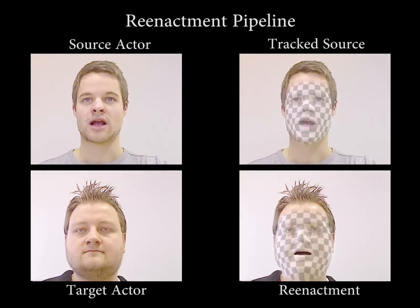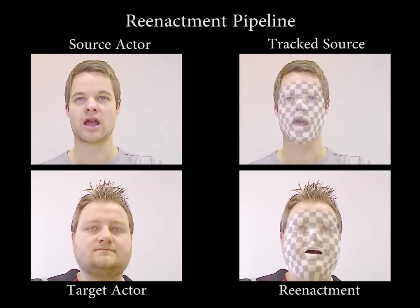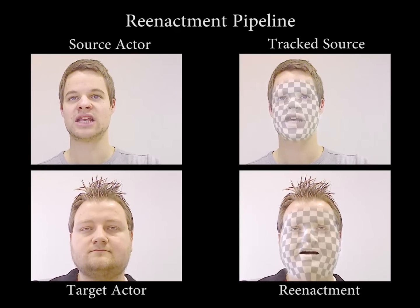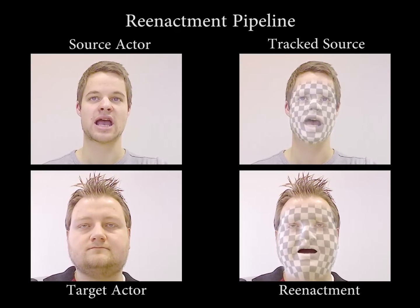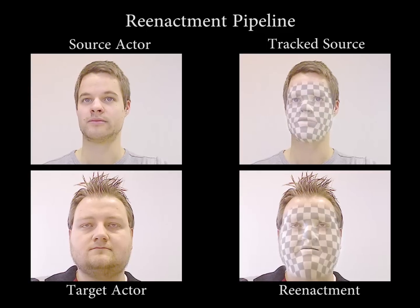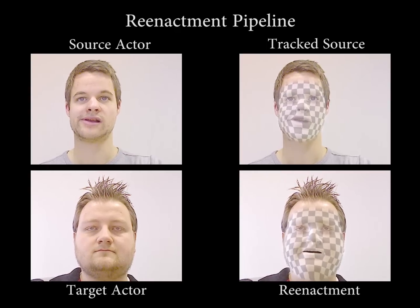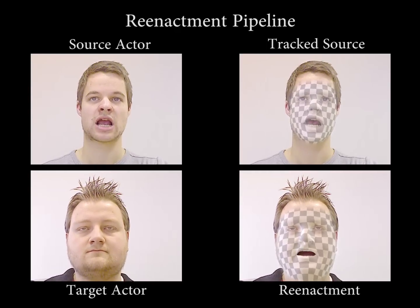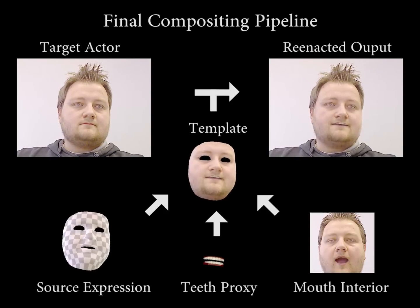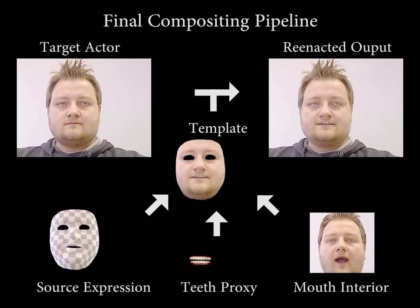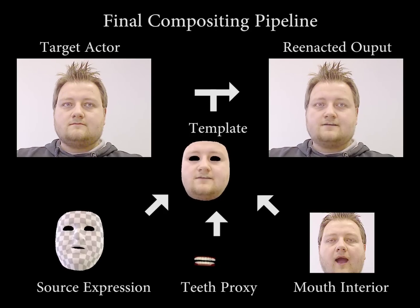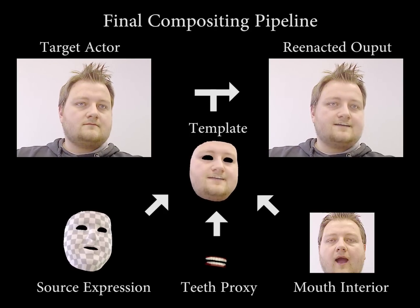For reenactment, source and target actors are tracked, and the source expression parameters are mapped to the target actor. Since the mouth changes shape in the target, we synthesize a new mouth interior using a teeth proxy and a texture of the mouth interior. Rendered face and mouth interior are composited to produce the target video.